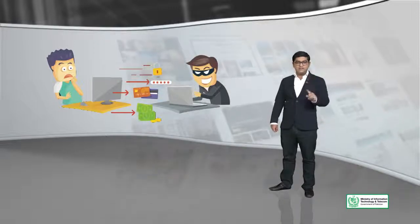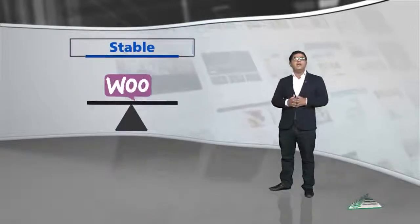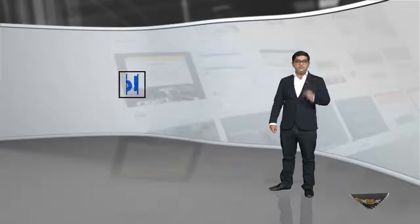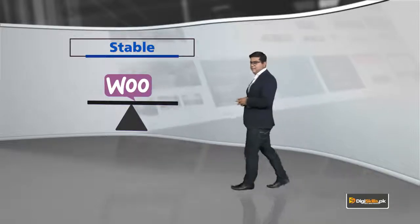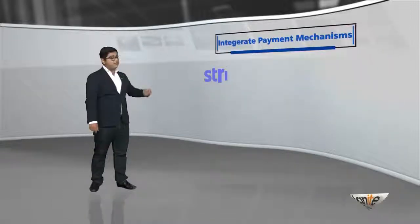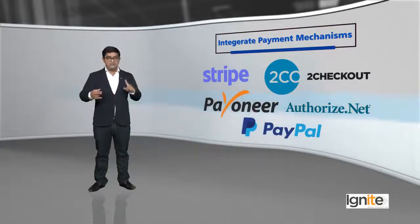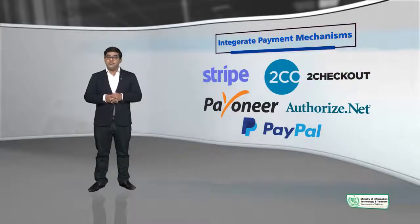Why is WooCommerce secure? Because WordPress itself takes responsibility for its security. It's also stable. Why do you need stability? You need a platform which is not just feature-rich and secure, but also stable — so that if you list a thousand products on it, it is able to function properly. So WooCommerce is highly stable. And what other features make WooCommerce really amazing? On WooCommerce you can integrate different types of payment mechanisms: you can integrate Stripe, 2Checkout, Payoneer, Authorize.net, and PayPal as well.